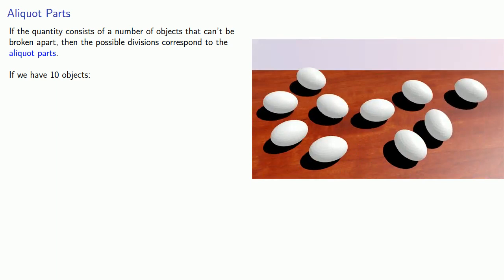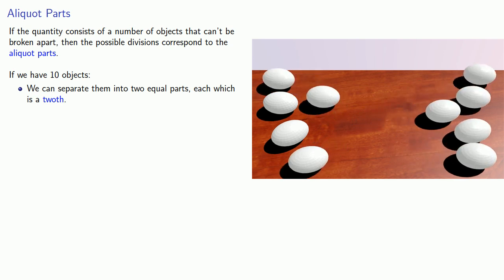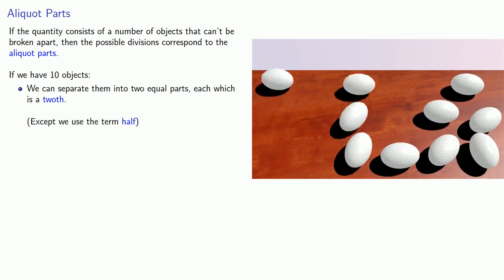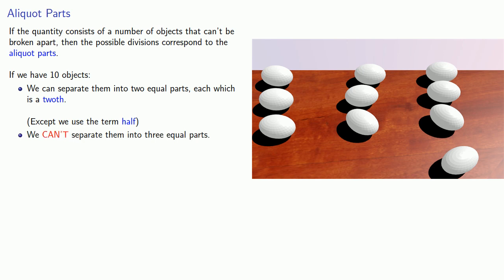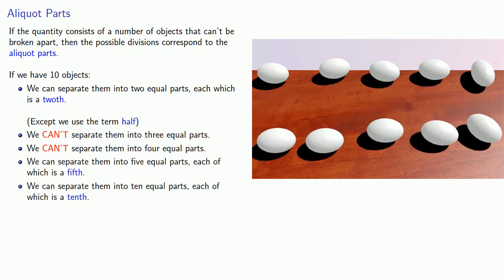Aliquot parts are very closely related. In a cake, we can cut the cake into any number of pieces. But if our quantity consists of a number of objects that can't be broken apart, then the possible divisions correspond to the aliquot parts. For example, let's say we have ten eggs. We can separate them into two equal parts, each of which is a half. We could try to separate the eggs into three or four equal parts, but we can't. But we can separate them into five equal parts, each of which is a fifth, or into ten equal parts, each of which is a tenth.